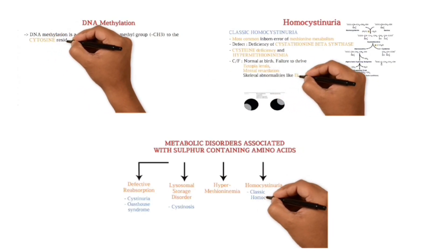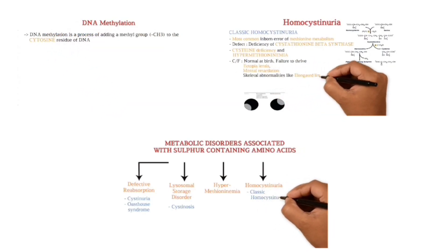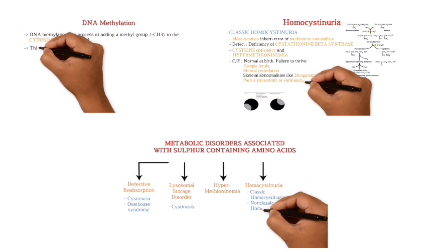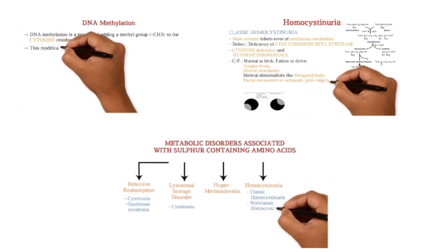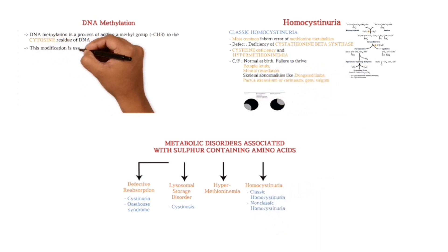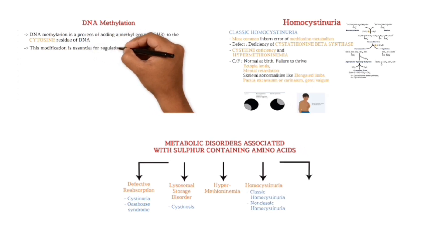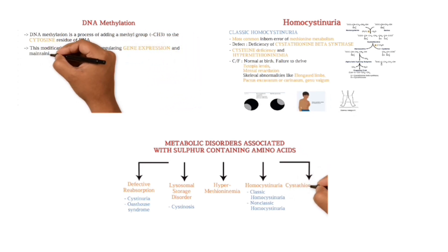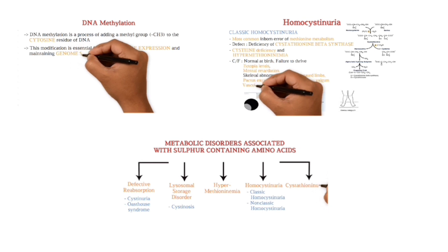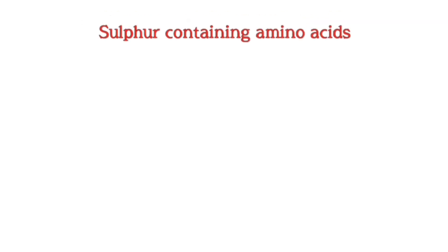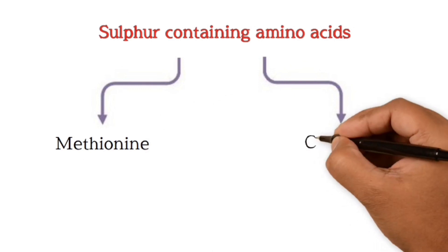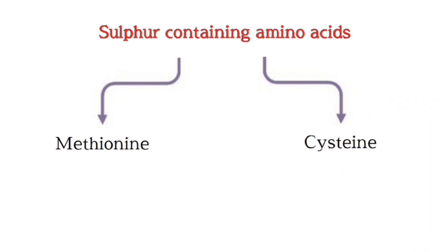Hello friends. In a series of upcoming videos we will discuss about the metabolism of sulfur containing amino acids. This video will serve as the first part of this series. There are two sulfur containing amino acids: methionine and cysteine.